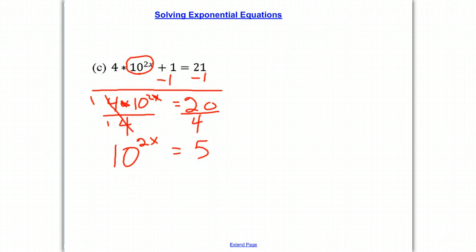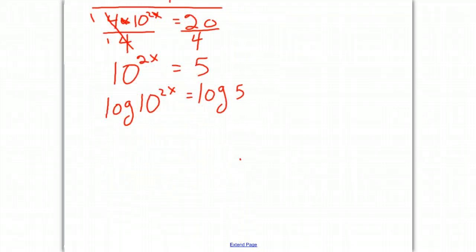And then using our power rule, we can find the log of both sides. The log of 10 to the 2x is equal to the log of 5. Let's move this up a little bit. And now using our power rule, we get 2x times the log of 10 is equal to the log of 5.